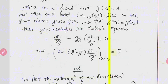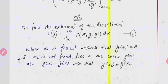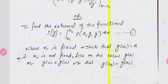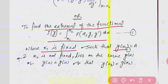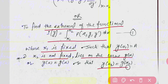In other words, we can re-write this statement as: we have to find the extremum of the functional I[y] where x1 is fixed, y(x1) = a, and x2 is variable lying over the curve g(x), such that y(x2) = g(x2).